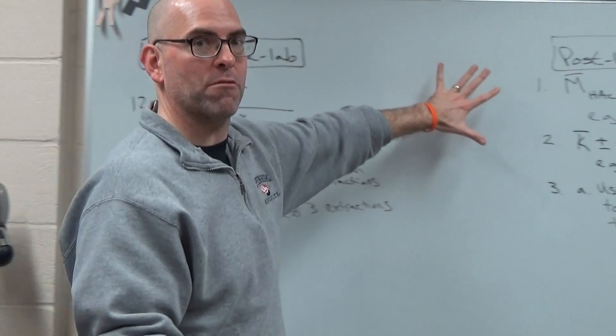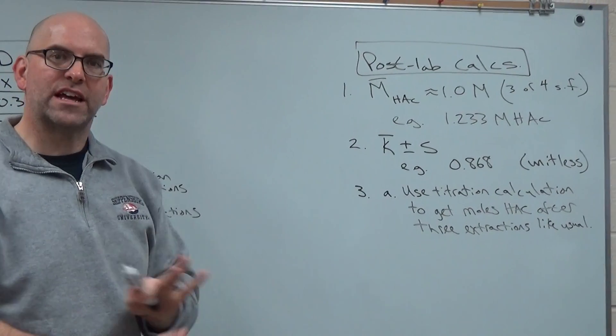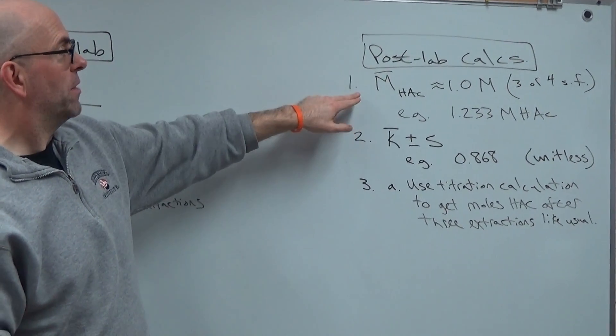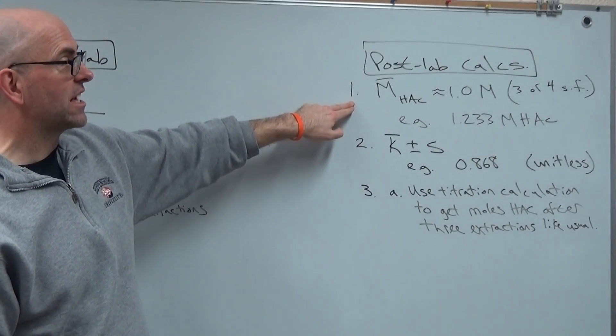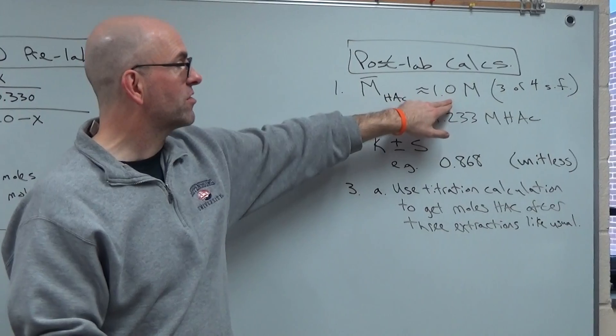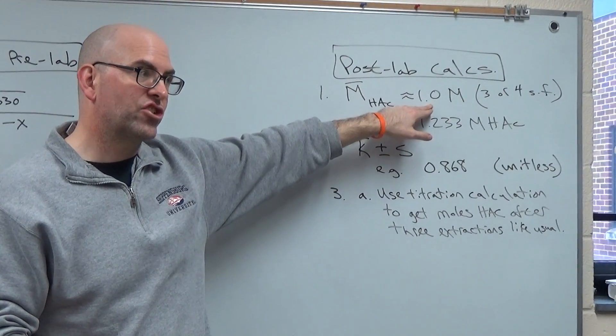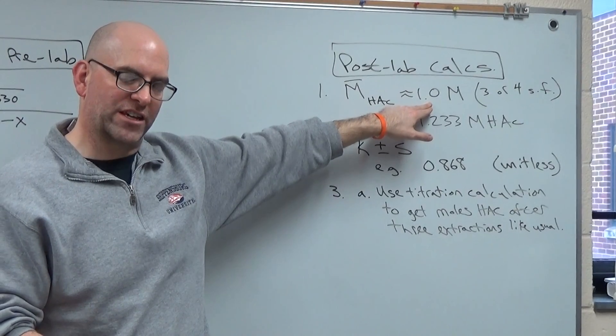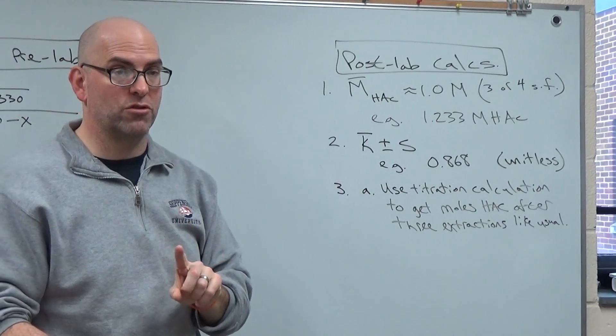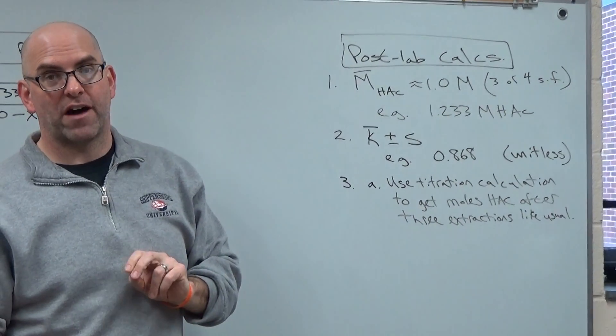So moving over to your experimental calculations. So you've collected all your data, you're doing your calculations, and we're certainly not going to review all of this. But in the first calculation, you're asked to calculate the, to standardize the acetic acid. You know that the answer is supposed to be around 1.0, and the whole point of standardization is to get more significant figures, to get a more precise answer. Depending on which pipette you used, you might get three or four sig figs in your final average molarity.